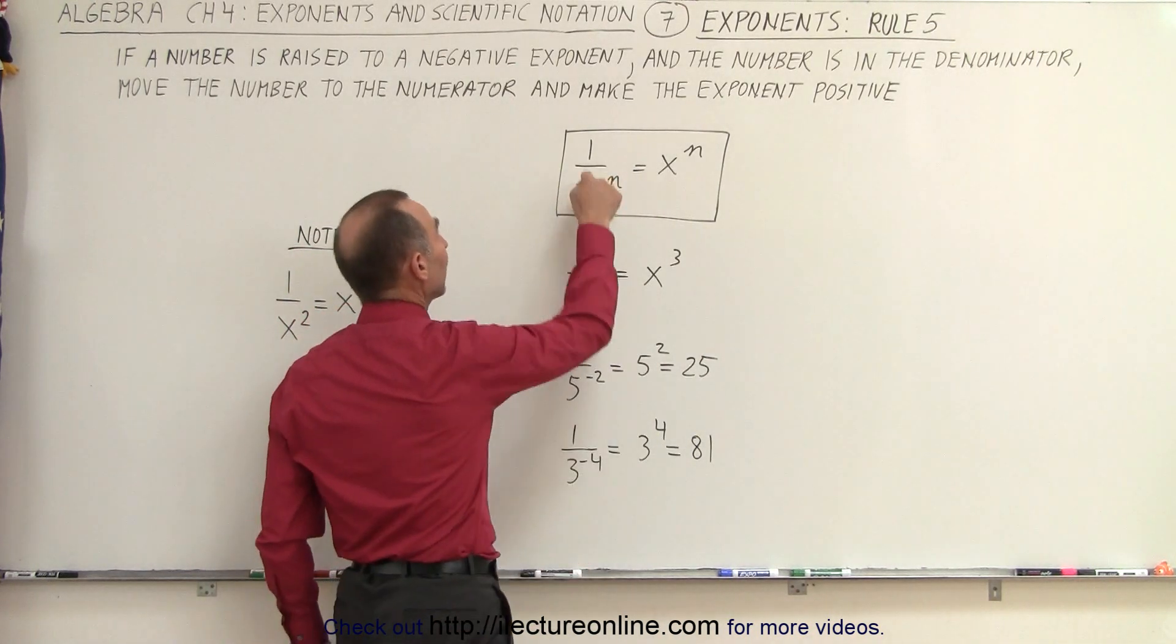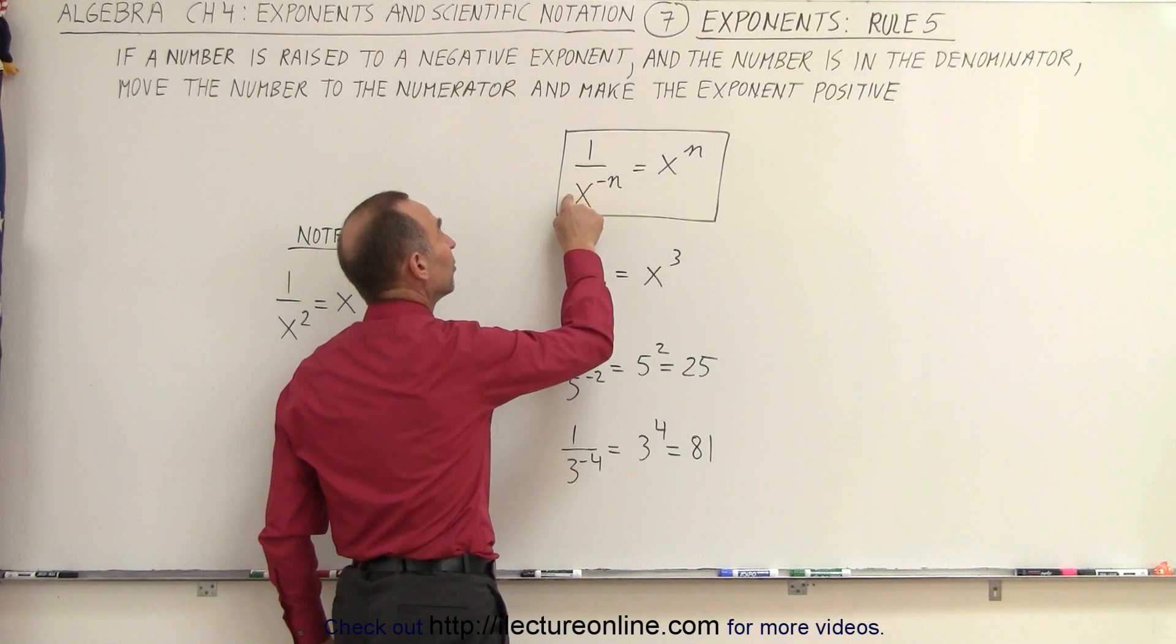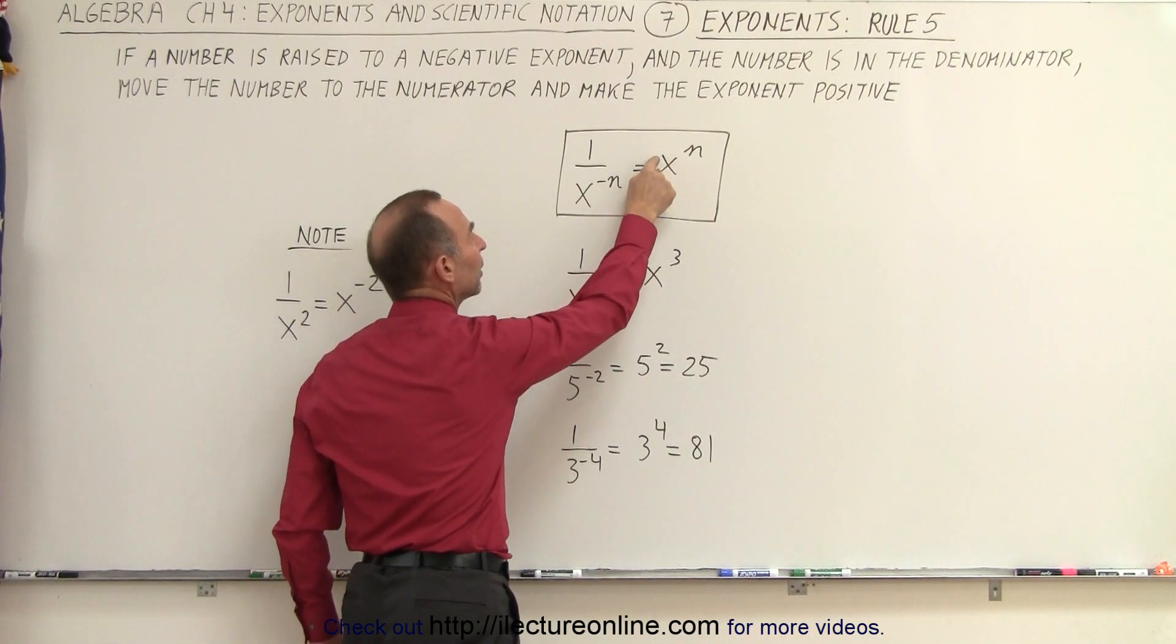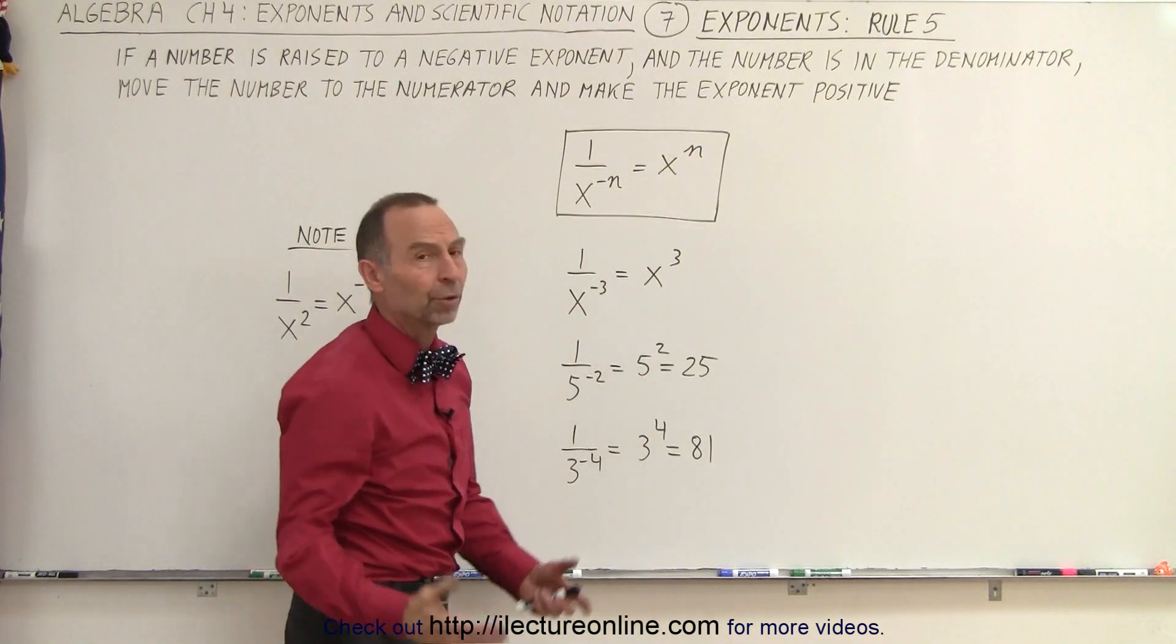That's all we did. We have 1 over x to the minus n power, the number is in the denominator, it has a negative exponent, we can move the number to the numerator and turn the exponent positive.